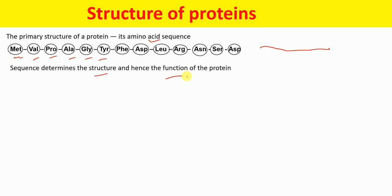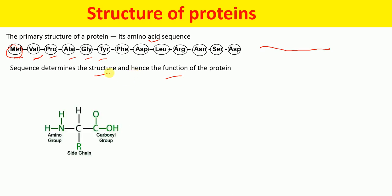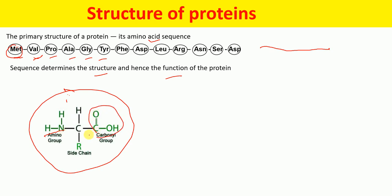So how is one amino acid linked to another amino acid, resulting in the formation of the primary structure? As you might know, this is the general structure of an amino acid. We have two groups: one is the amino group, another is the carboxyl group, and in the middle we have the carbon with the side chain. Amino acids consist of these two groups — amino group and carboxyl group.